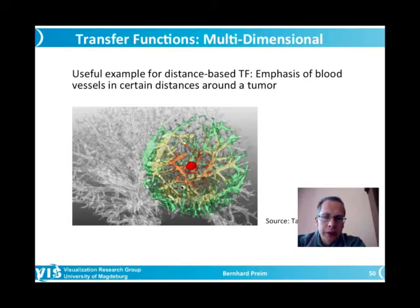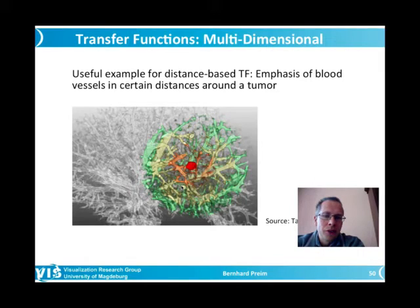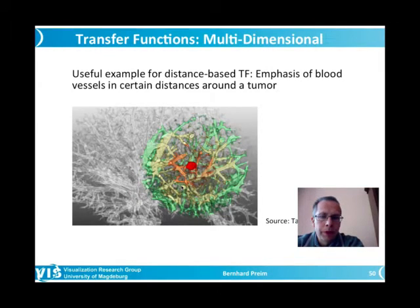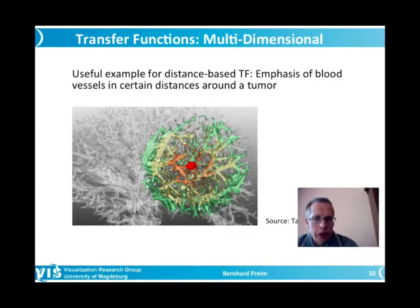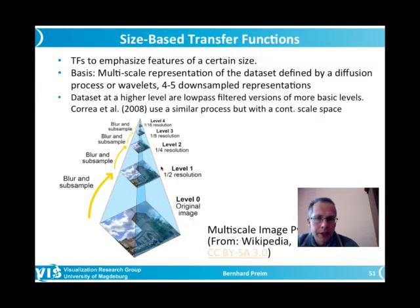Here we have three different colors representing vascular structures in different safety margins around the tumor. Since the tumor is already red, we use orange, yellow, and green. The green vessels are already quite safe — probably they do not need to be resected. But the orange vessels at the 5mm security margin, and the yellow vessels at the 10mm margin, definitely need attention and may need to be resected. That could be realized with distance-based transfer functions.